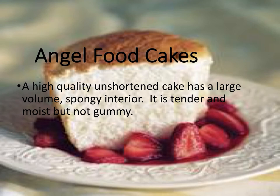Angel food cake is airy and because of its lightness and pure white color it is said to be the food of the angels. This cake has no egg yolks, fat or artificial leavener, and therefore relies totally on stiffly beaten egg whites for leavening. Its sole ingredients are egg whites, cream of tartar, sugar, flour, salt and flavorings such as fruit extracts and essences. Angel food cake has the highest sugar content of all the sponge cakes, and this added sugar is needed to support and stabilize the whipped egg whites.